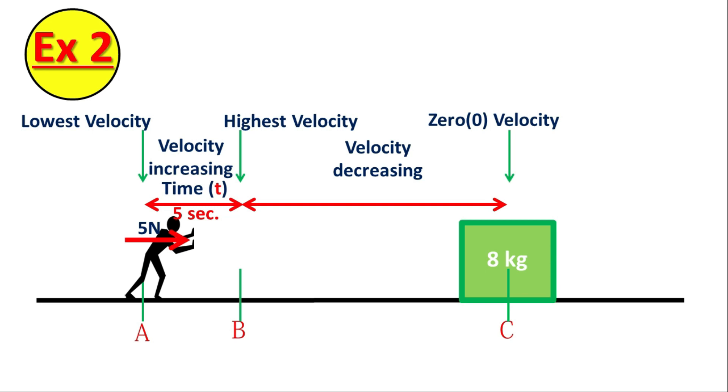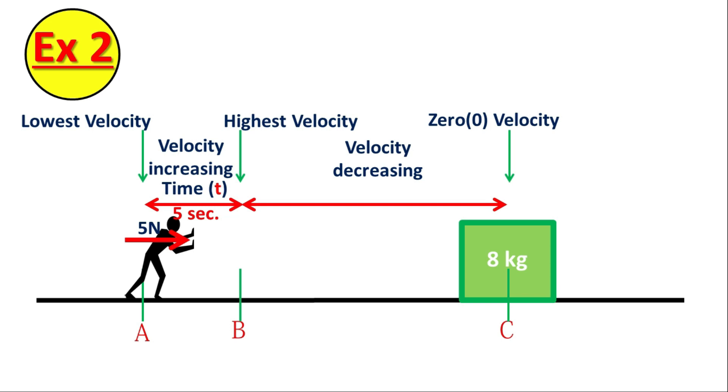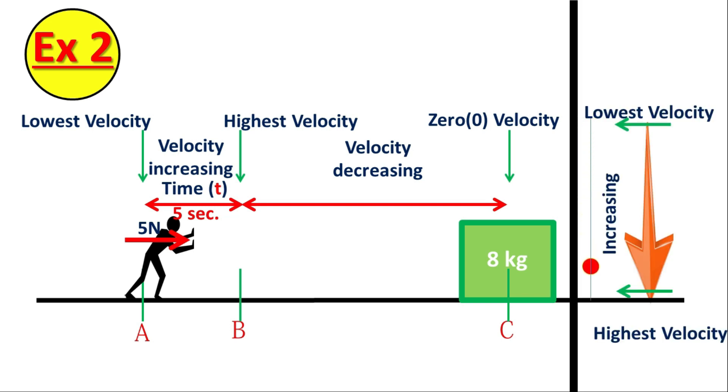You can notice that the result of same force on same object is different. And one more thing. You will notice in the example 2, between point A and point B, force is behaving like gravitational force. As the object accelerates, due to gravitational force, in the same manner, in this example, the object is accelerating from point A to point B.